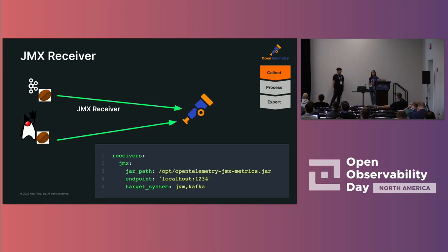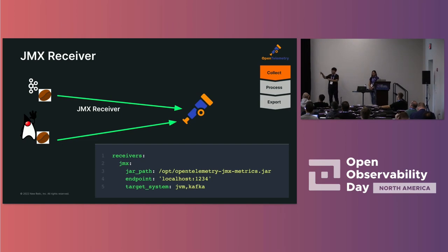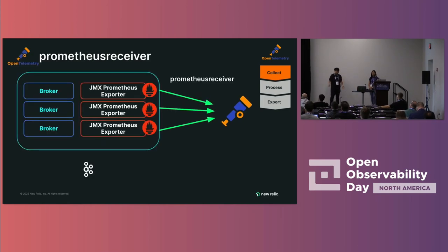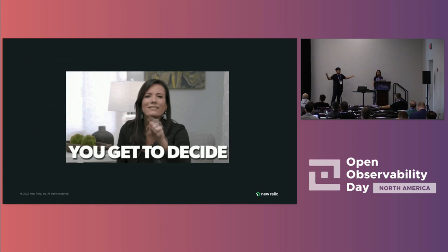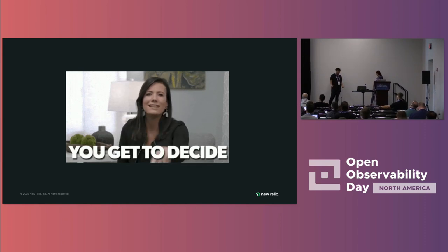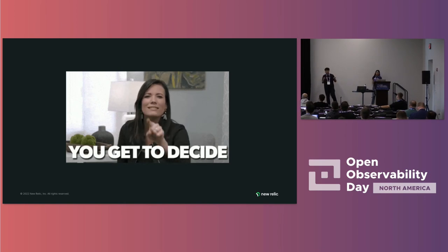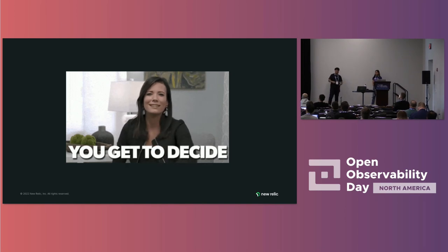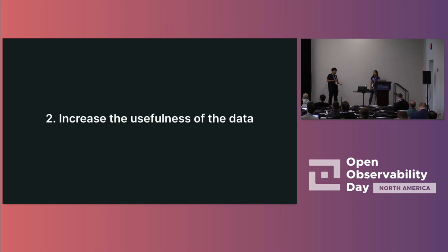If you don't want to give the collector access to your admin APIs, you can use the JMX receiver, which targets specific MBean servers to pull metrics from Kafka, JVM, Cassandra, and more. We collected health and performance metrics from Kafka servers using the JMX receiver through the OpenTelemetry Collector. Or if you prefer Prometheus, you can deploy the JMX Prometheus exporter in your Kafka cluster and use the Prometheus receiver to scrape those endpoints. OpenTelemetry is very powerful because it puts the decision in your hands — there are many ways to get data out of your environment, and you can even write your own receivers.